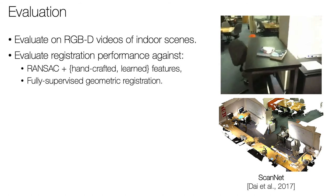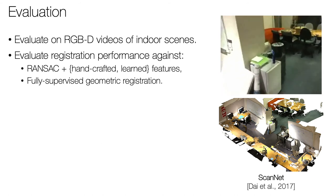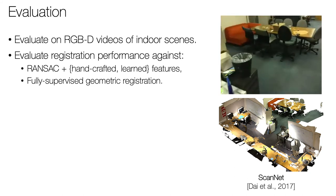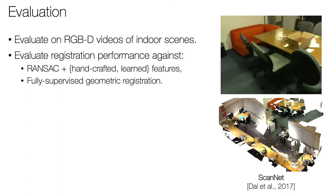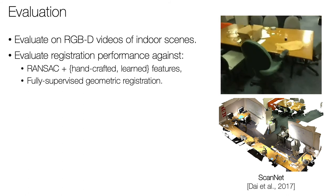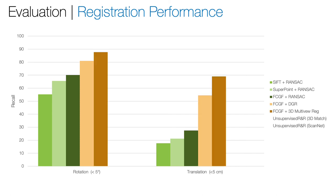We evaluate our approach on ScanNet, a large dataset of RGBD video of indoor scenes. We evaluate our registration performance against two sets of baselines: RANSAC with handcrafted or learned descriptors, as well as supervised geometric registration approaches. RANSAC achieves better recall with learned features than with handcrafted ones, especially for FCGF. Furthermore, combining FCGF with supervised geometric registration methods further improves its performance.